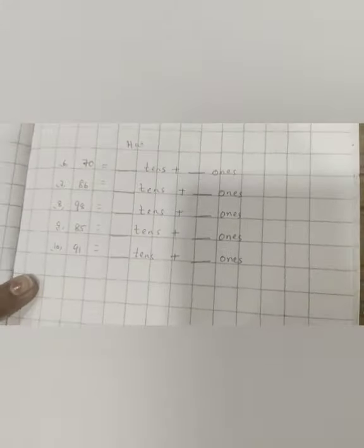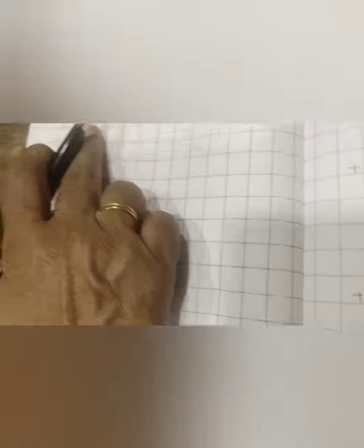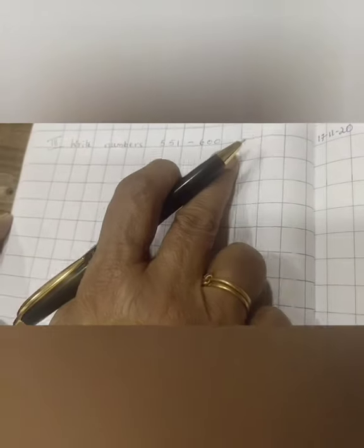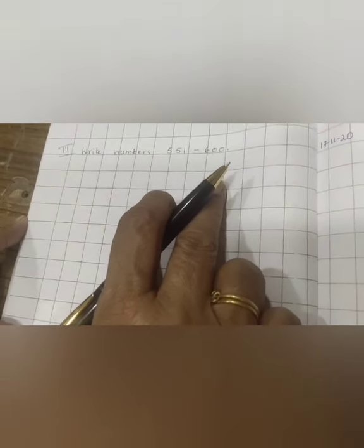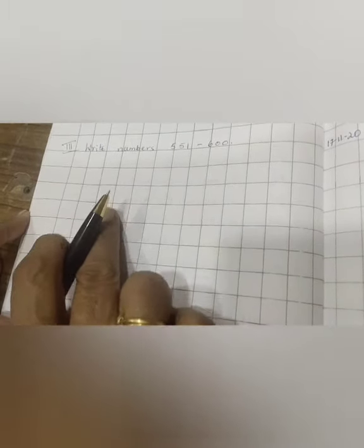Next page, write numbers 551 to 600. Leave the margin line and write. Practice well, children, for the test. See you in the next class.